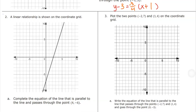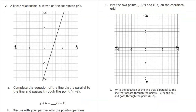Number 2: a linear relationship is shown on the grid. Complete the equation of the line that is parallel to the line and passes through the point 4, negative 6. What is missing in the equation? The slope. Figure out the slope and discuss with your partner. What did you say the slope was? Three over one — which is just 3. You could start here: 1, 2, 3 up and over 1. I'll do it a couple of times to make sure it's consistent.